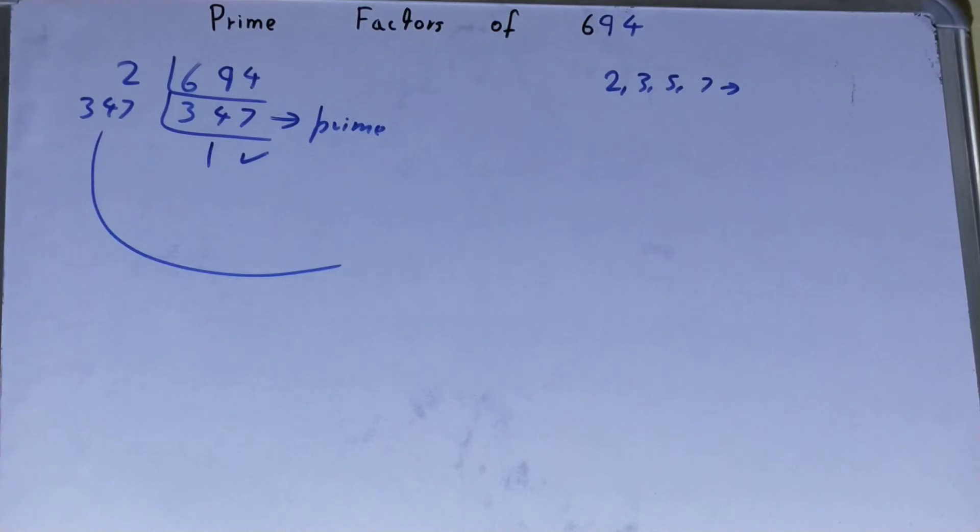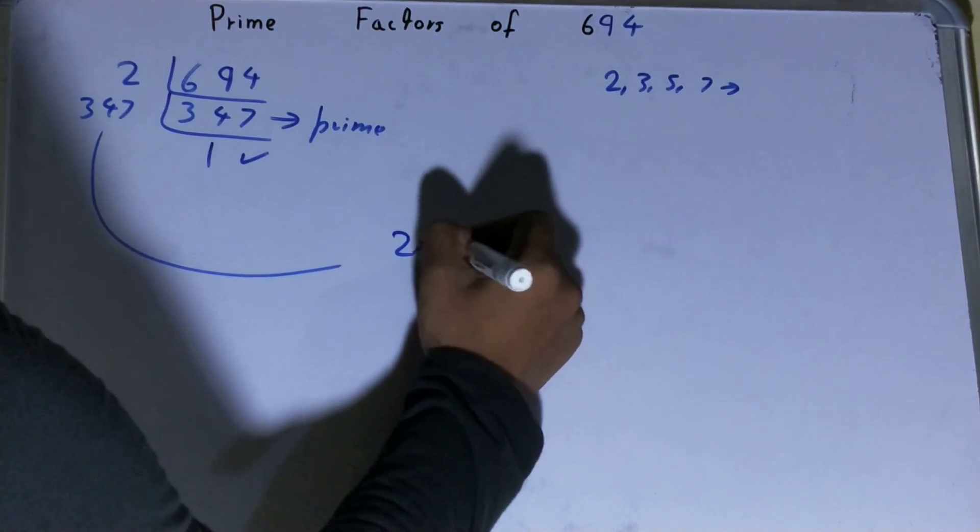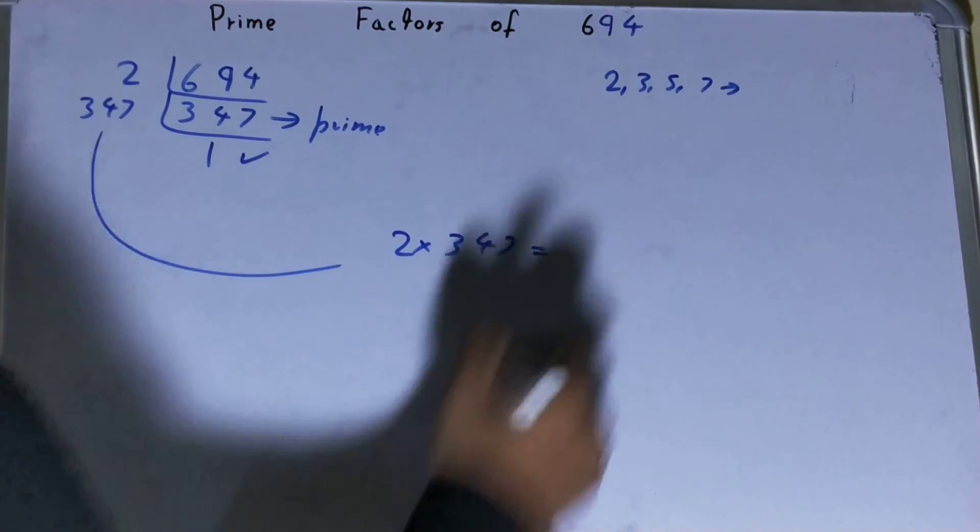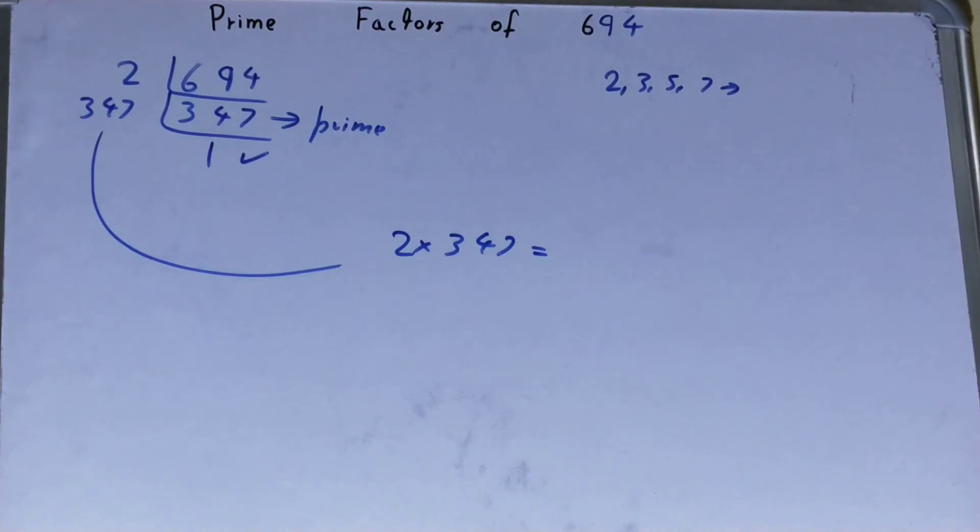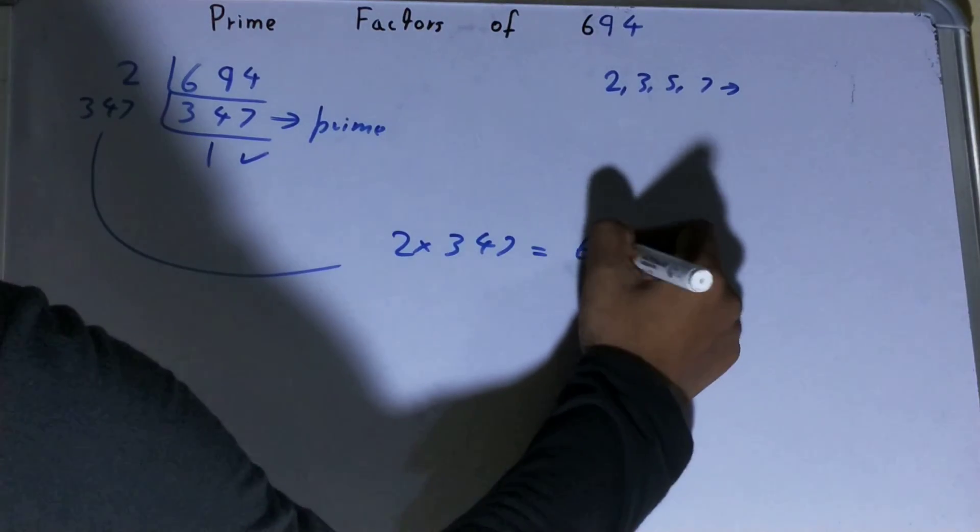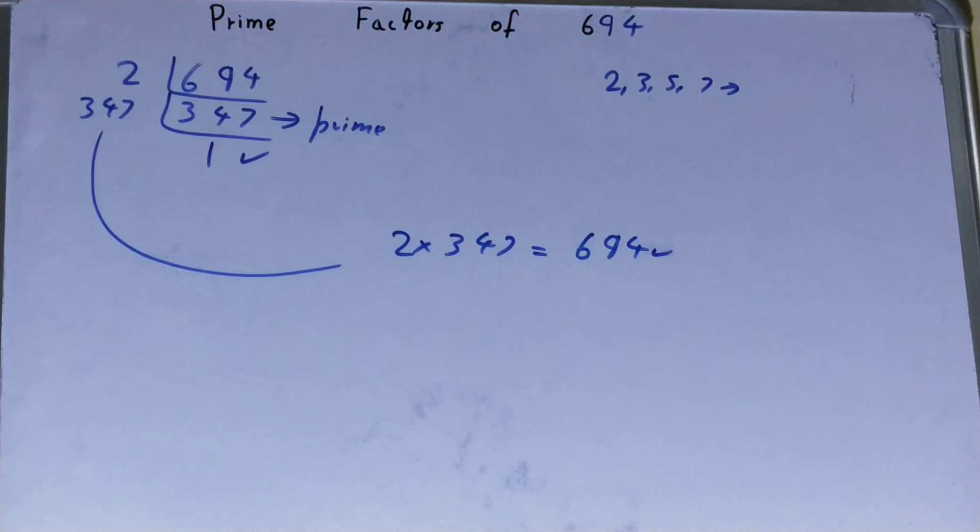That is 2 × 347. Now if you want to check whether it is right or not, you can multiply it. And if on multiplying you get the number back again, that means your calculation is correct. If not, you need to recheck.